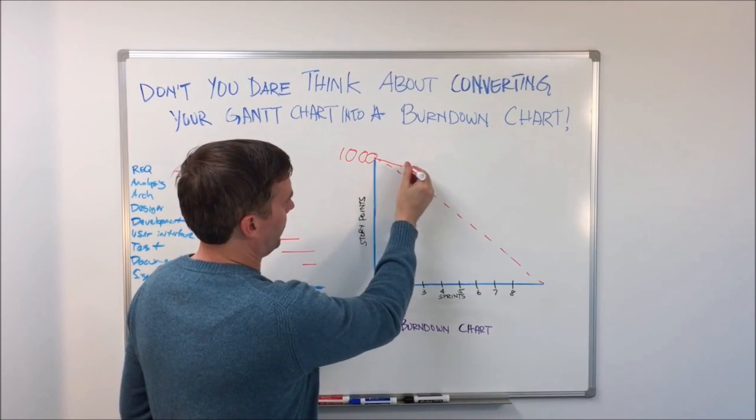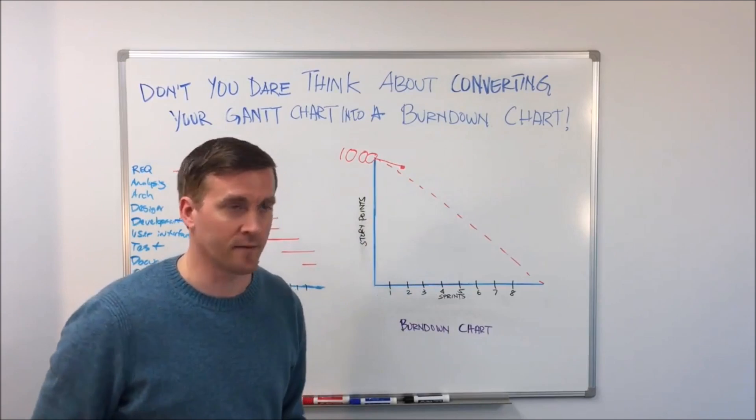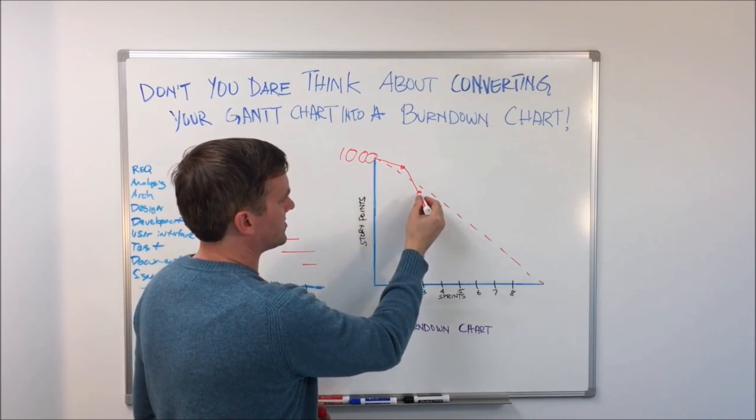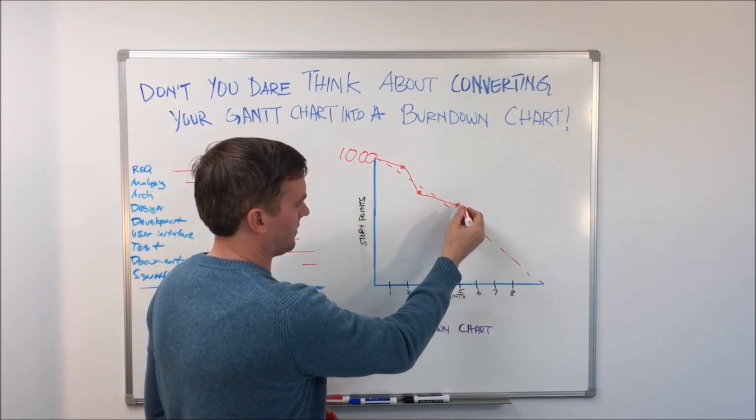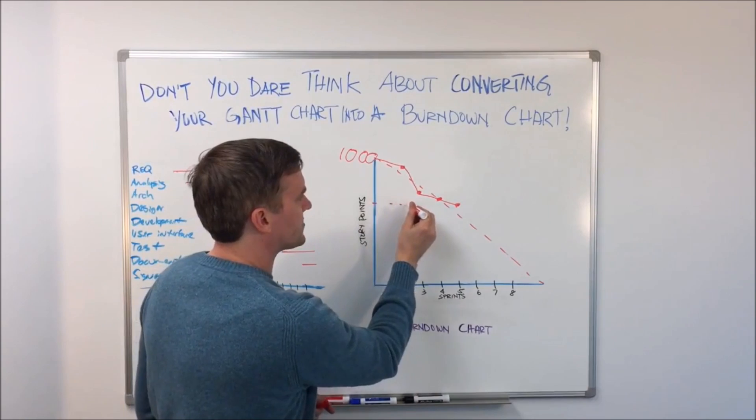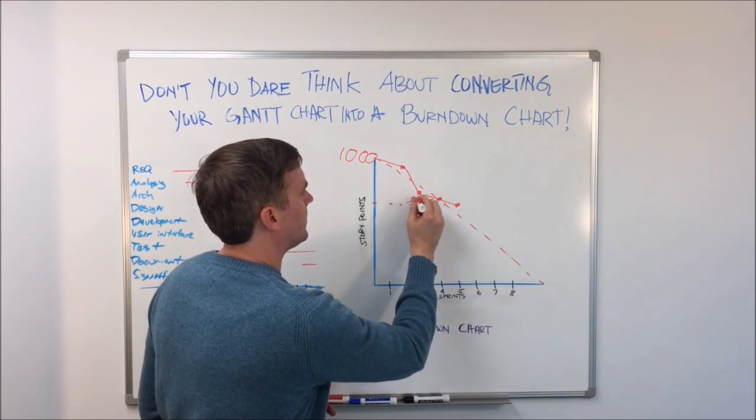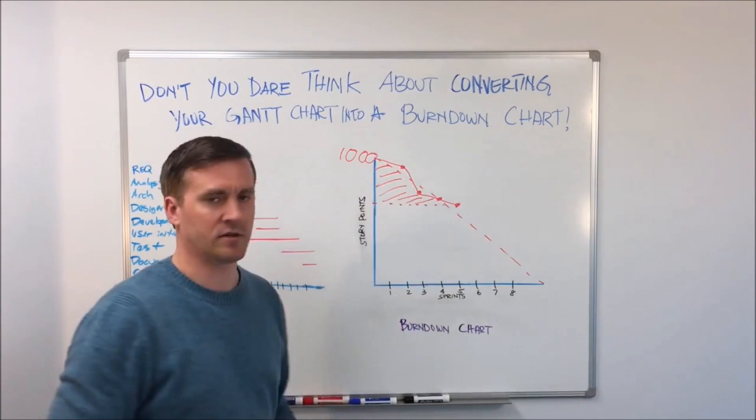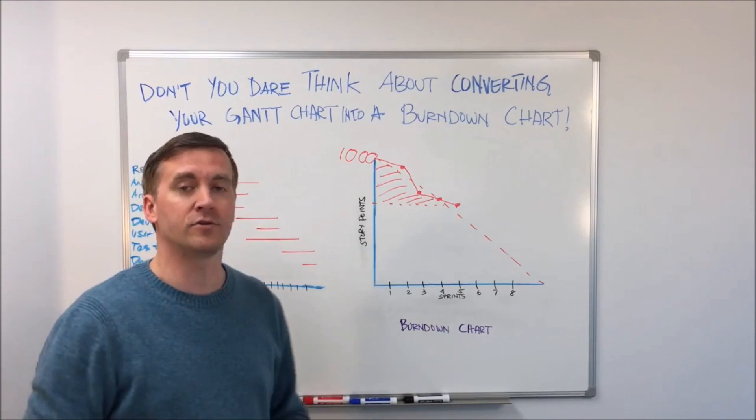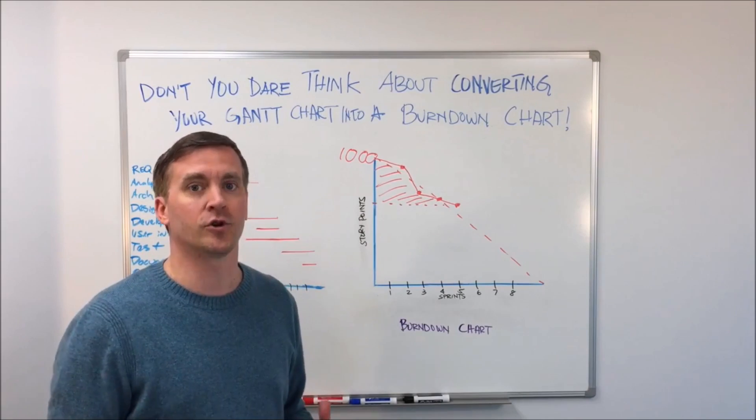So in real life, if after sprint one we completed this much work here, and after sprint two we completed about that much work, and sprint three we finished out to here, sprint four, all of this work you see here is finished, it's ready to go, it's shippable, you can use it. Whether or not you ship it is up to you, but the point is you could use it.